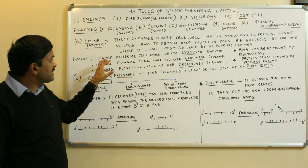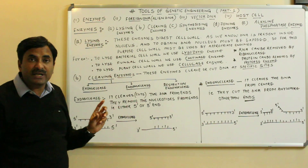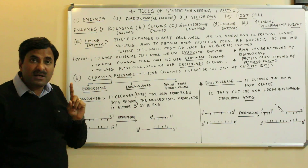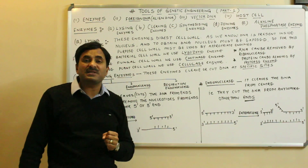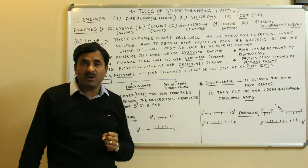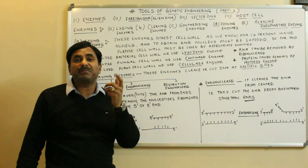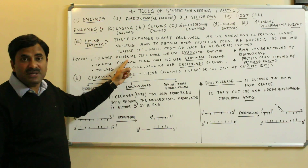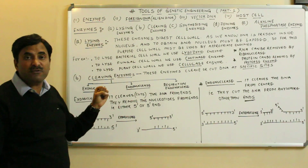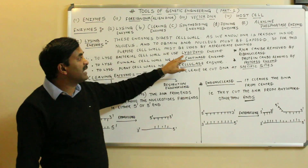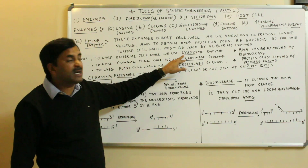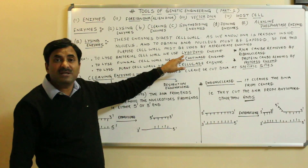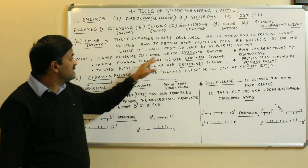If we want to isolate DNA from a bacterial cell, we know the bacterial cell wall is made up of mucopeptides or peptidoglycan. To lyse the bacterial cell wall and obtain DNA from it, we use a lysing enzyme called lysozyme. So the bacterial cell wall can be lysed with the help of the lysozyme enzyme.